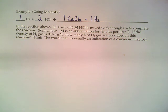Just in case you don't remember, that capital M, what that stands for, what molar means, is how many moles there are per liter. If the density of hydrogen gas is 0.073 grams per liter, how many liters of hydrogen gas are produced?